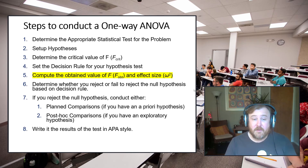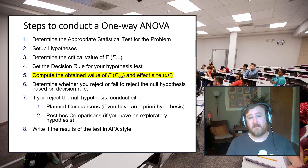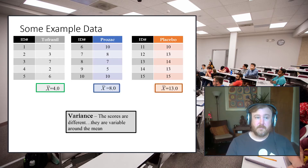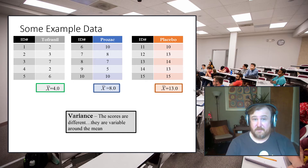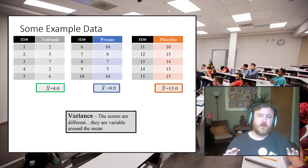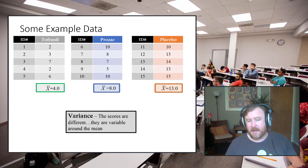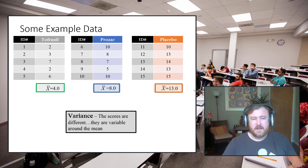After setting the decision rule and determining the critical value, we compute the obtained value of F and an effect size measure. Here's our example data in raw form — different people in each group, each group containing five people, so N = 15 and little n per group is 5. What we're doing is partitioning variance into variance explained versus variance unexplained.